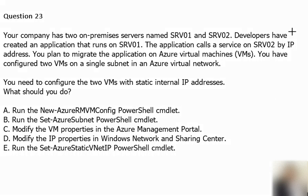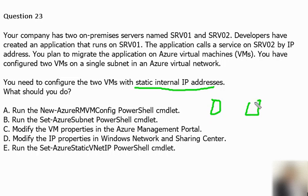When we create virtual machines on Azure, it provides dynamic IP by default. We want to change this dynamic IP to static. The application dependency between SRV01 and SRV02 means their addresses must not change — the application on SRV01 will continue talking to SRV02 without interruption due to IP address changes, because it is pointing to that specific IP address.